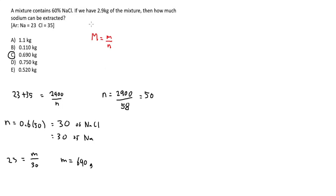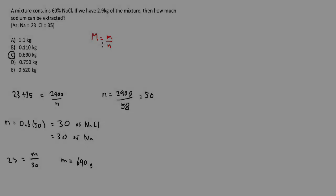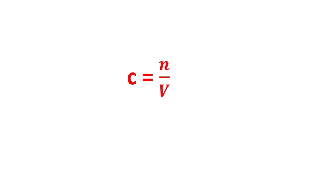Now let's take a look at concentration. You use this formula — C equals n over V — whenever you're dealing with a solute being dissolved in a solvent to form a solution. Concentration can be expressed in a few different ways. The most common, and the one most likely to appear in the IMAT, is molar concentration. Sometimes they ask for grams in the solution, in which case you substitute little m for little n, but molar concentration is by far the most common.